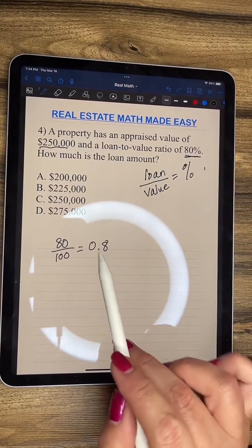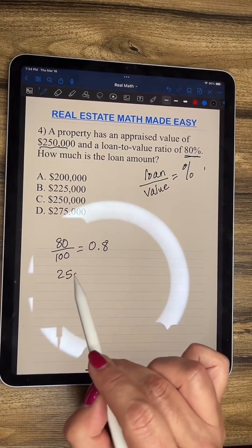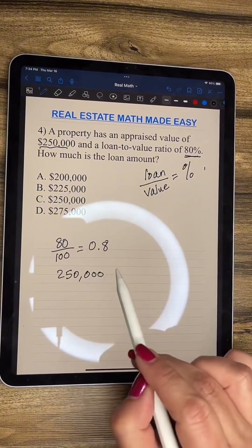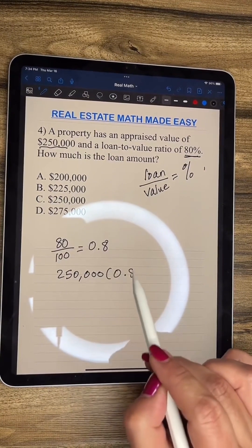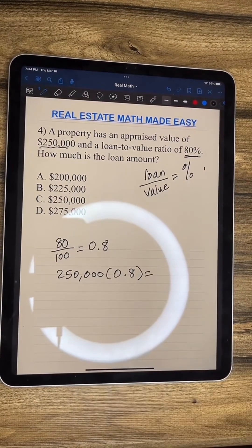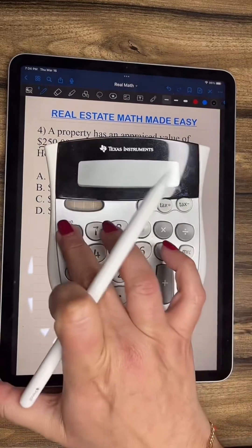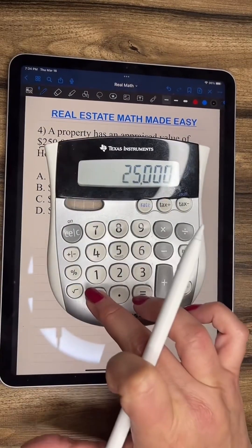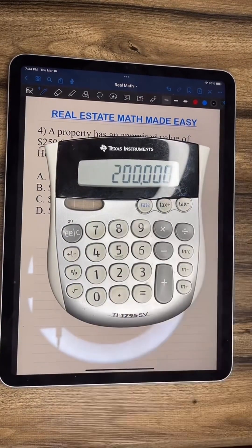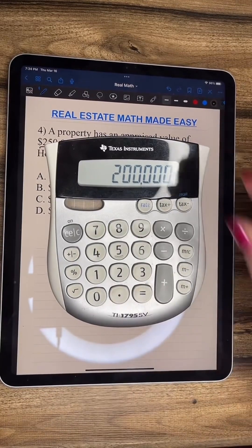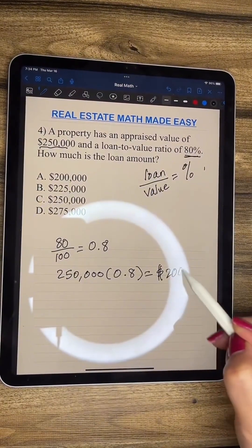So now we're going to multiply $250,000 times 0.8. And what do we get? $200,000. So the answer is A.